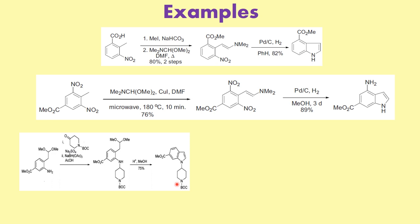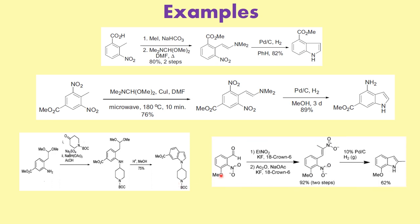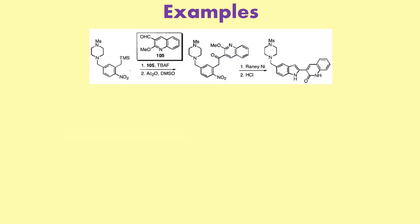One more example: instead of ortho-nitrotoluene, what we have is an aldehyde. The role is the same. What has been carried out is the Henry reaction — aldehyde and nitroethane. This gives the same beta-nitrostyrene intermediate. After that, hydrogenation is done, which again is a reduction followed by cyclization to give the desired indole. This is a very important example — the first step is a Henry reaction, and you need to clearly recognize that.